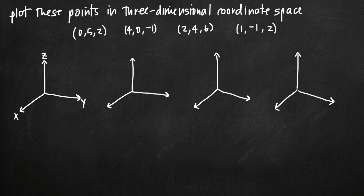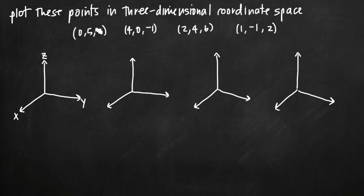Today we're going to be talking about plotting points in three-dimensional coordinate space. In this particular problem, we've been given four coordinate points, each of which are defined in three-dimensional coordinate space, and we've been asked to plot them. I've gone ahead and drawn four different sets of three-dimensional axes, all of which follow the right-hand rule, with coordinate axes set up as x, y, and z. I'm going to plot one of these points on each set of axes.